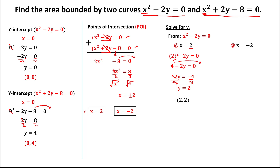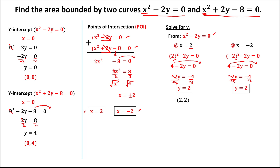To solve for the other value of y, at x equals negative 2, using the same equation: negative 2 to the power 2 is also positive 4, minus 2y equals 0. Transpose to the other side: negative 4. Divide both sides by negative 2, so y equals positive 2. The coordinate for x equals negative 2 is y equals positive 2, giving point (−2, 2).